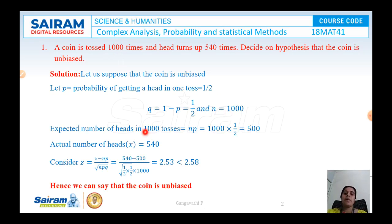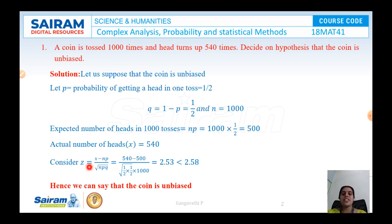The expected number of heads in 1000 tosses is N × P = 1000 × 1/2 = 500. But according to the problem, the number of heads that turned up was 540. So the actual number of heads X = 540. Now let us evaluate the normal variate Z = (X − NP) / √(NPQ). With X = 540, NP = 500, N = 1000, P = 1/2, Q = 1/2, on simplifying we get Z = 2.53.